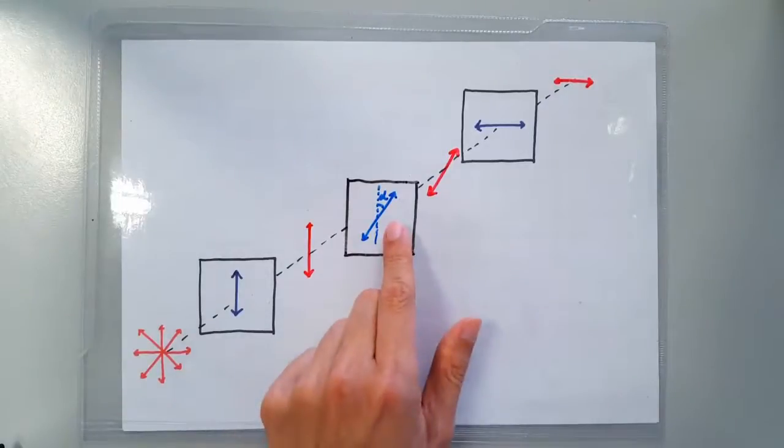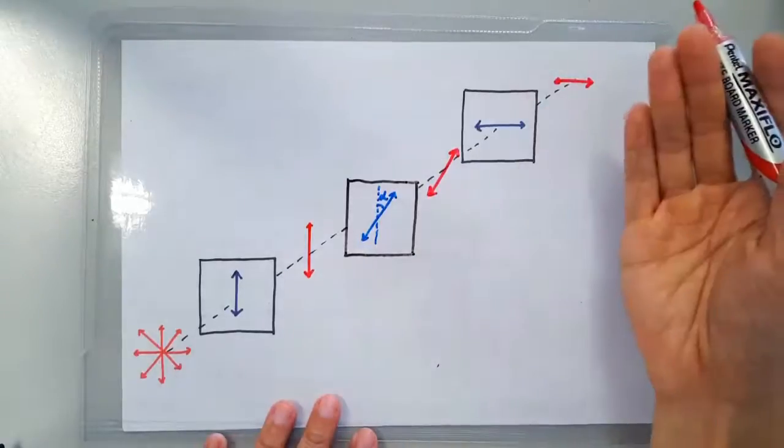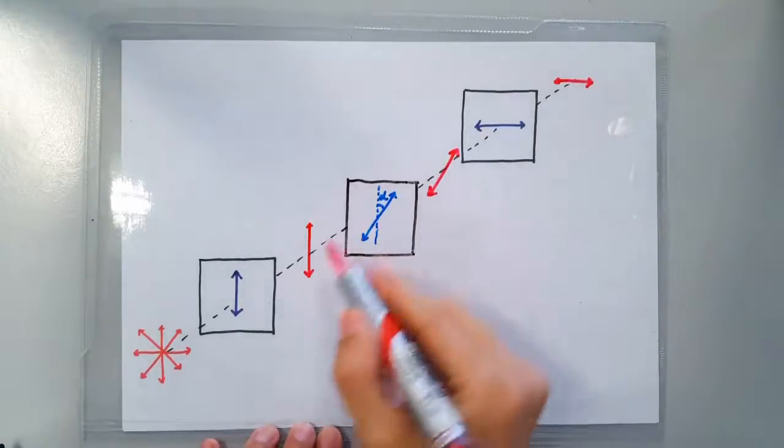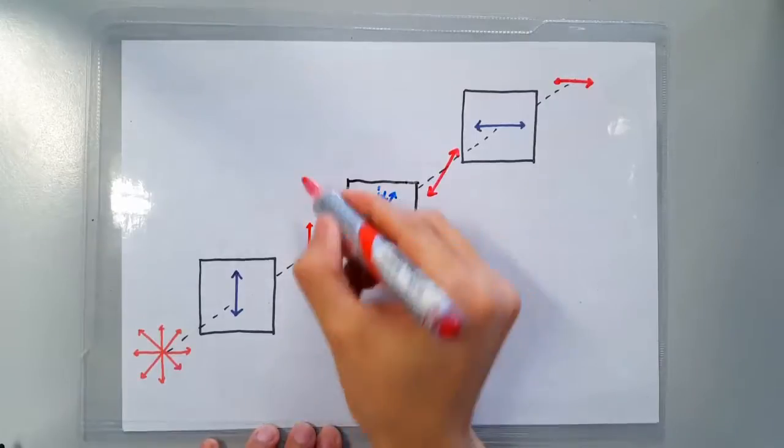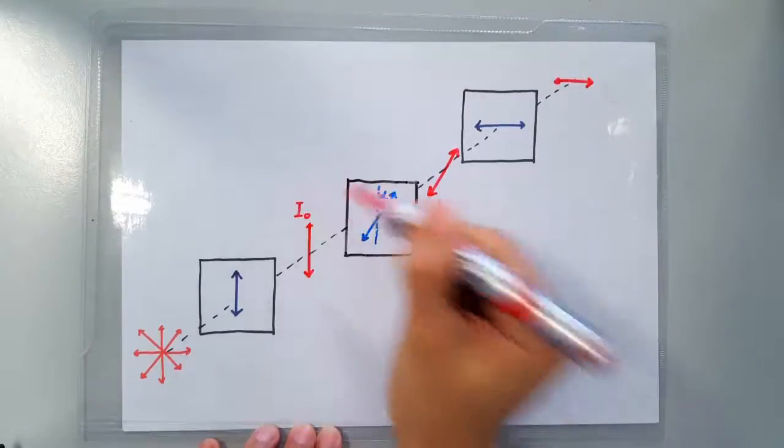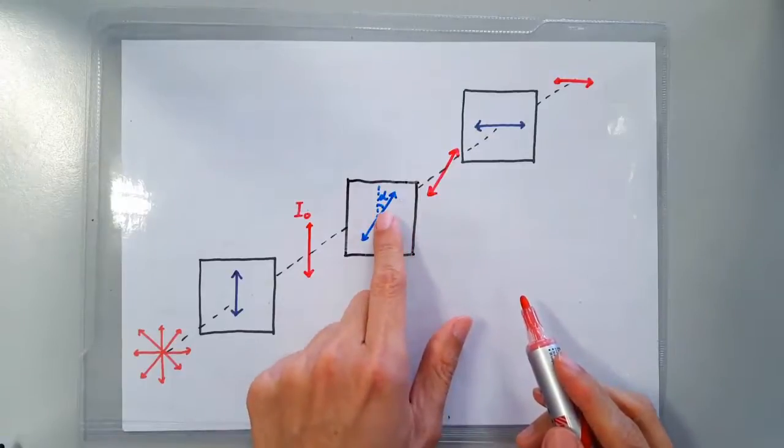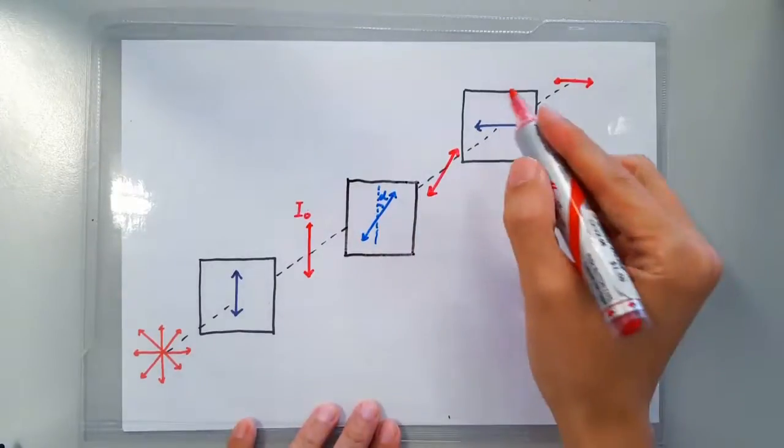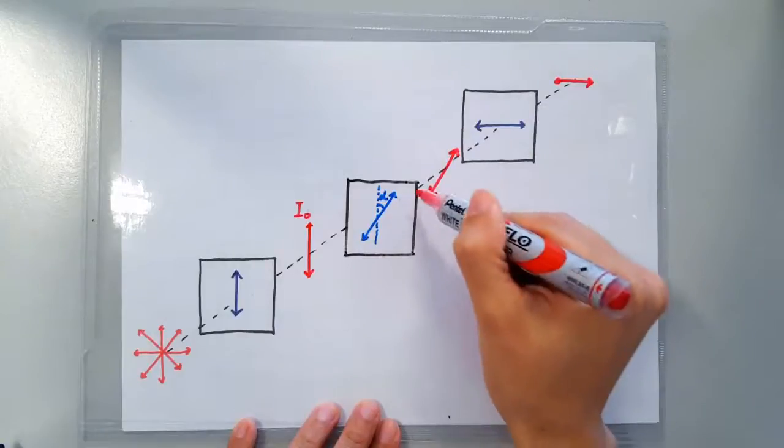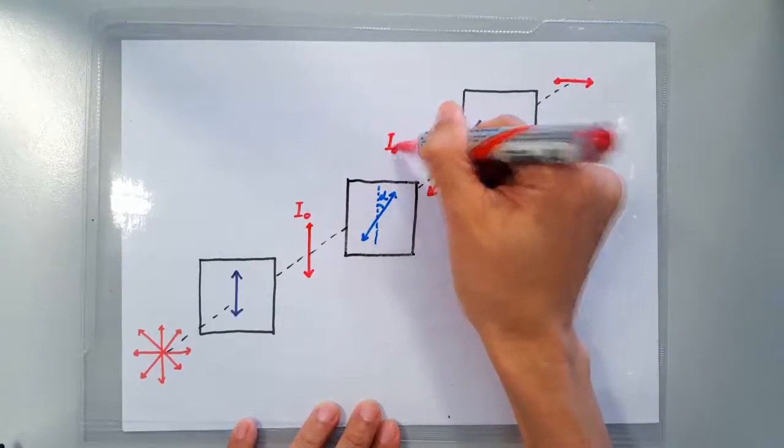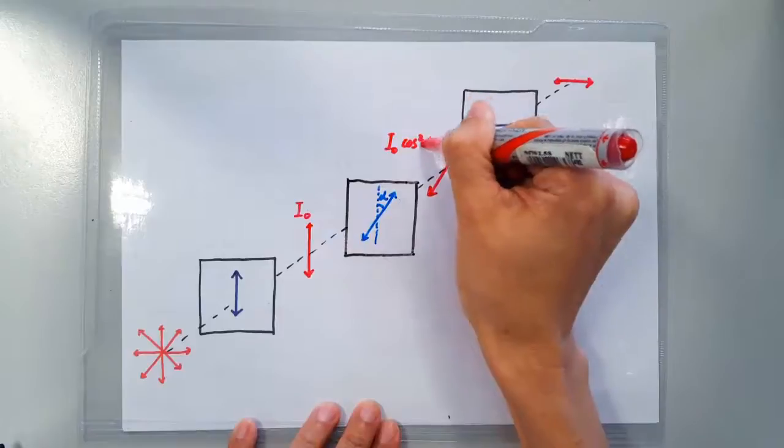Now what should the orientation of this polarizer be in order to pass the maximum amount of light through? So let's suppose the intensity of this light here is I₀. Since this light is misaligned with the polarizer by an angle alpha, Malus's law tells us that the intensity of the light after this polarizer is going to be I₀ cos² alpha.